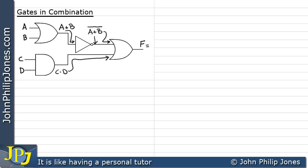F equals the inputs to this final OR gate. One of the inputs is NOT(A or B), and the other input is C and D — I'll put those in brackets to distinguish the two inputs. These two inputs are ORed together because they go to a two-input OR gate.